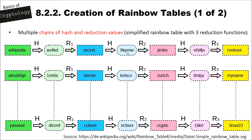Then you get another pre-image from the pre-image space and you apply the hash function again to get another hash value. You apply another reduction function — so we have R1, R2 — and reduce from the hash value space to the pre-image space. We get another word, for instance 'Jimbo', then apply the hash function, get another hash value, reduce again with a different reduction function, and get our final pre-image value. This is the last value in our chain. So we have a starting value, a long chain and an end value, and this table can be hundreds of megabytes or even gigabytes, all pre-computed.